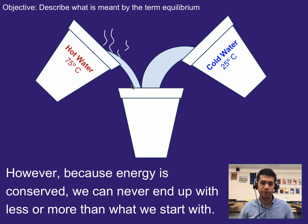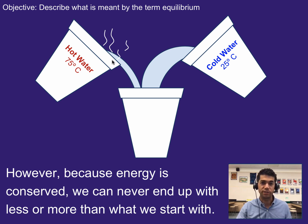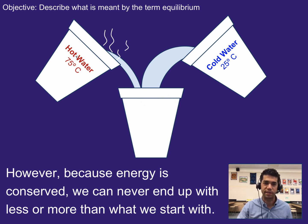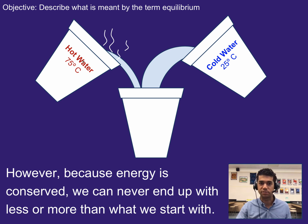Another thing to note is that because energy is conserved, no matter how we mix these two things, we could never get water hotter than 75 degrees or colder than 25 degrees simply by mixing. What we're really looking at is the average amount of energy of the molecules in each one. We can't get extra energy out of something that is at 75 degrees, so we can't go above that — it represents the maximum average kinetic energy at the molecular level that we start with.